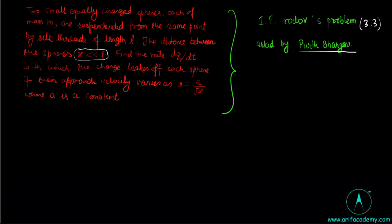Two small equally charged spheres, each of mass M, are suspended from the same point by a silk thread of length L. The distance between the two spheres, which is X, is very less compared to L.